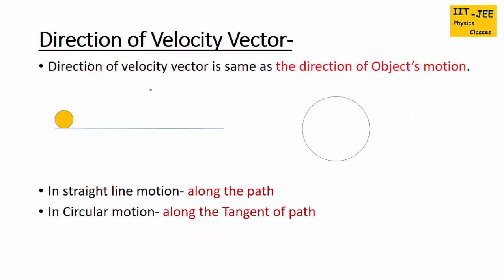Next, how to determine the direction of a velocity vector. The direction of the velocity vector is the same as the direction of the object's motion. If an object is moving in straight-line motion, then the direction of motion is along the path. Like this ball moving to the east — the direction of motion is east, and the velocity vector points in that same direction, towards east.